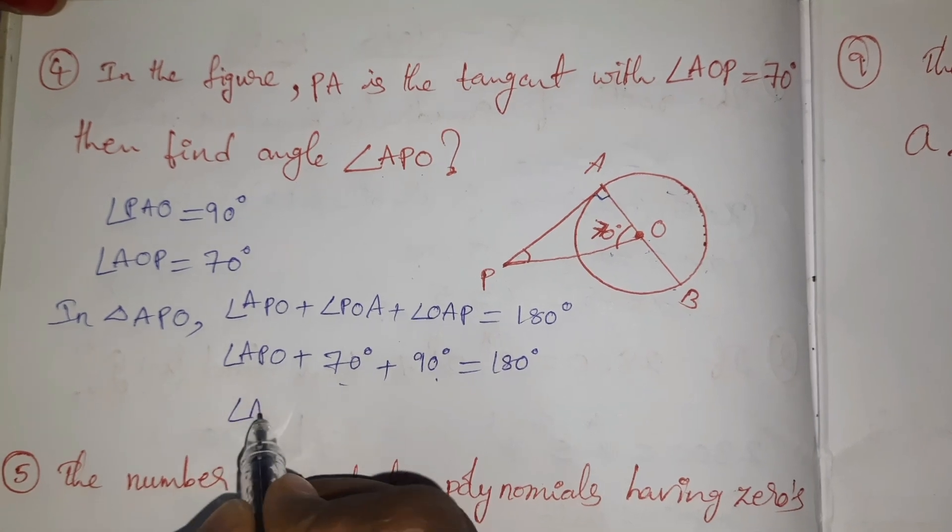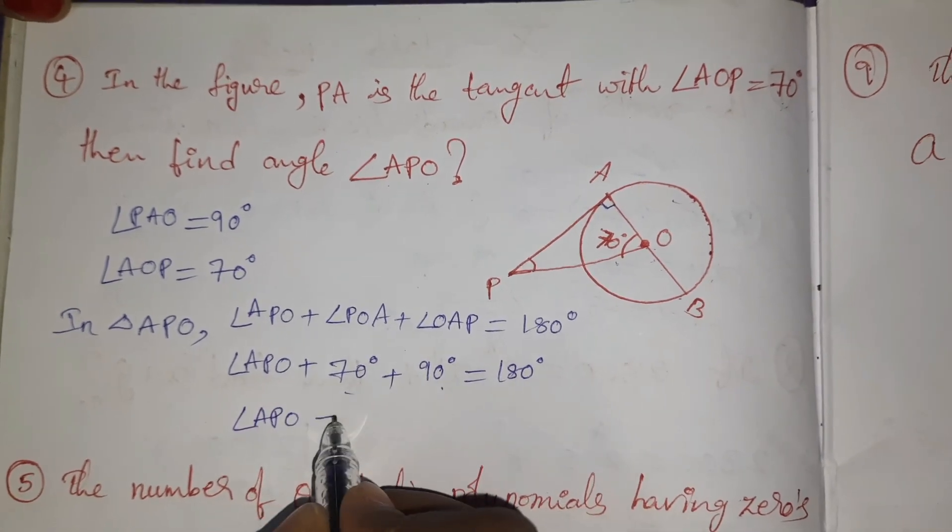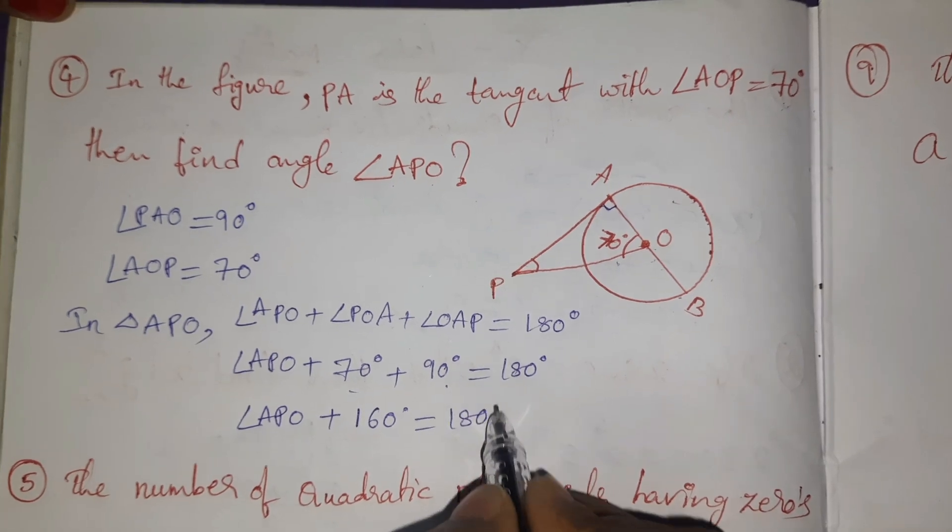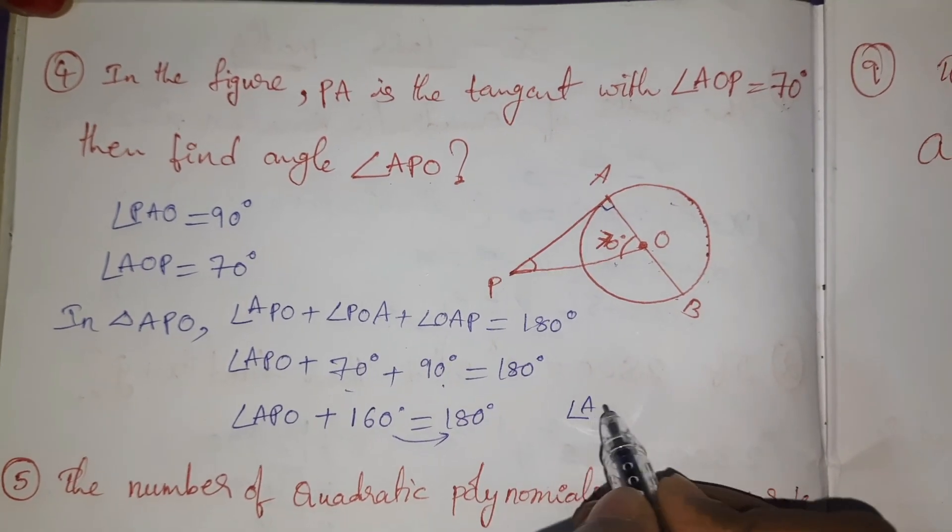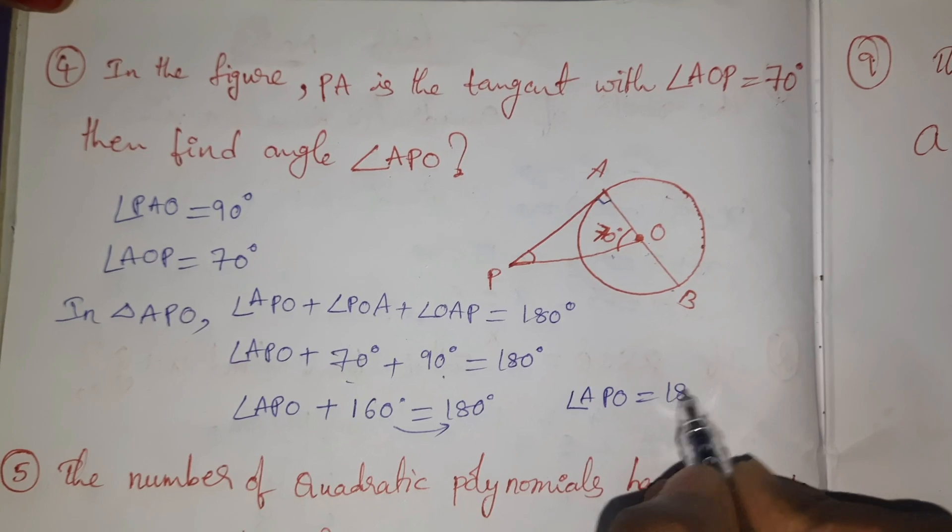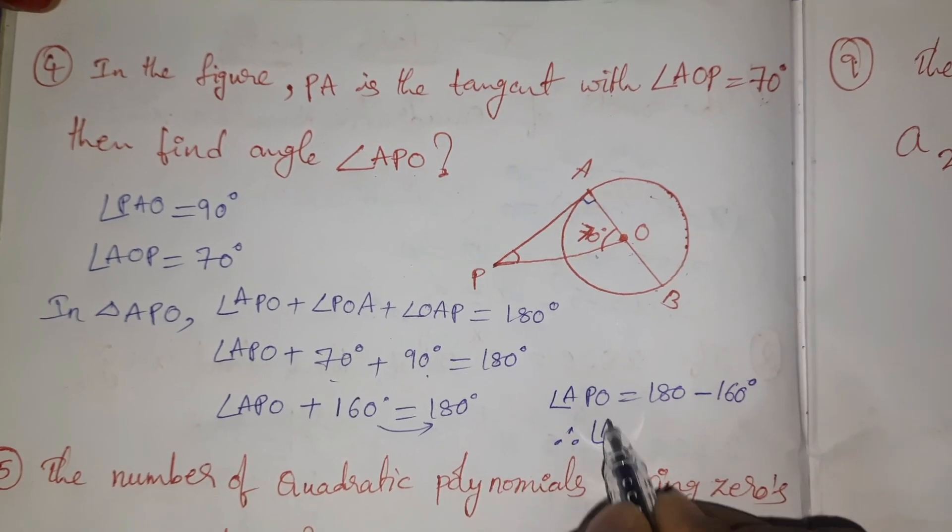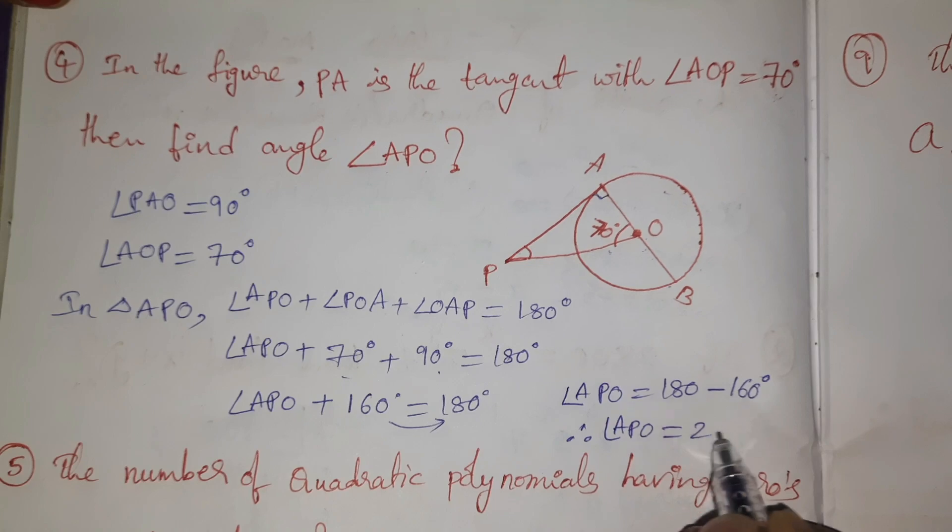90 + 70 is 160° = 180. Will go to subtraction. Angle APO = 180 - 160°. Therefore, angle APO = 20°.